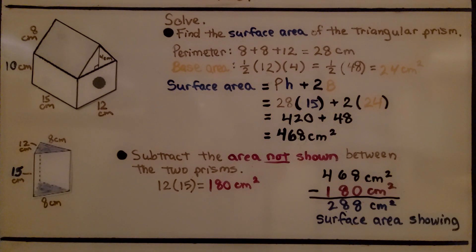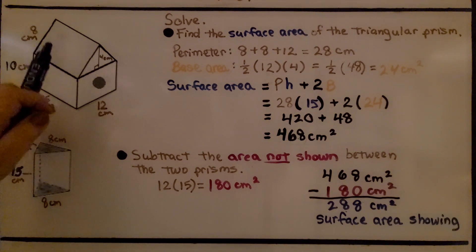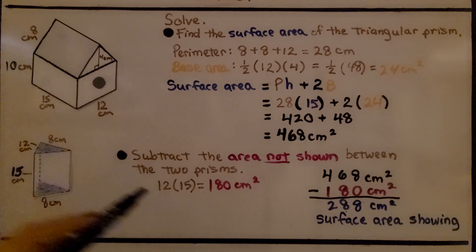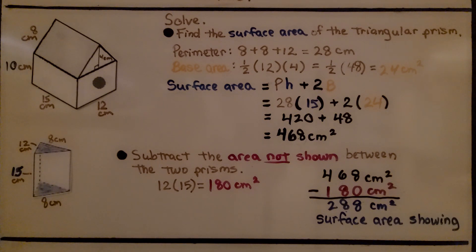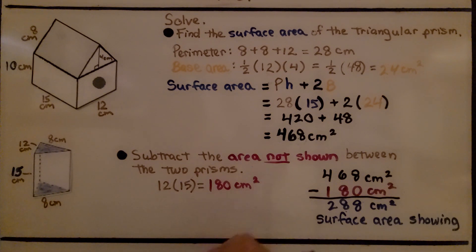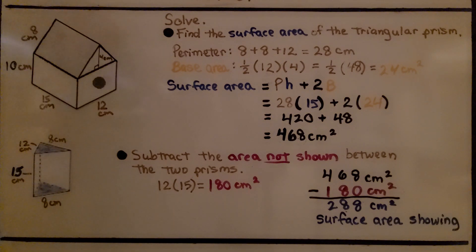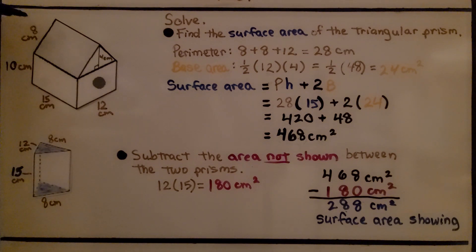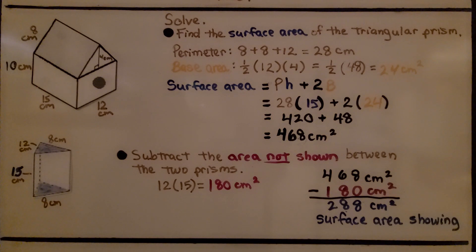Now we subtract the area not shown between the two prisms. Underneath the triangular prism is a 12 by 15 area, which is 180 cm². We subtract 180 from 468 and get 288 cm² of surface area showing for the triangular prism — the two slanted sides, the front triangle, and the back triangle.